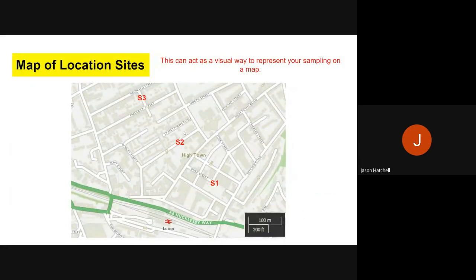And finally in this section, you need a map of the location sites. For example, I've quickly taken an OS map extract here from Luton and the surrounding area of Hightown in Luton. You can see here, all I've done is made sure the scale is on there and labeled site one, site two, and site three along the map, so I can show an examiner or anybody reading the investigation how I've chosen and where those sites are.